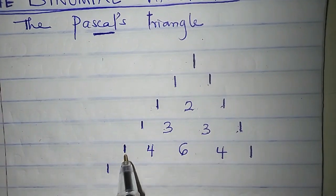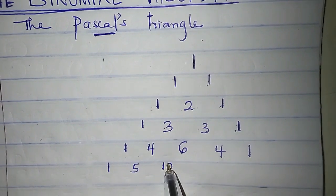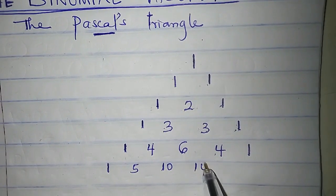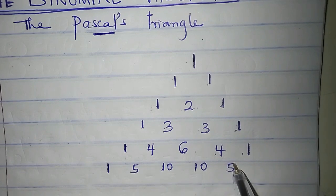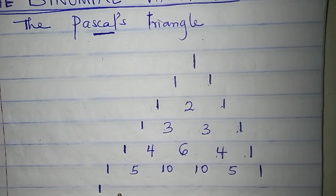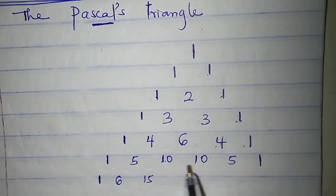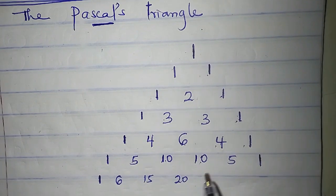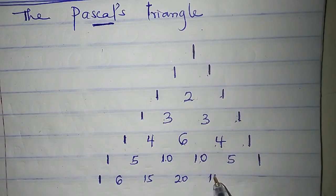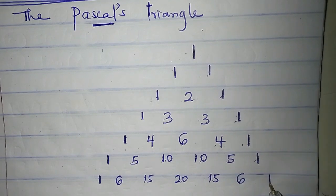1, 1 plus 4 is 5, 4 plus 6 is 10, 6 plus 4 is 10, 4 plus 5 is 5, 1. Then 1 again, 1 plus 5 is 6, 5 plus 10 is 15, 10 plus 10 is 20, 10 plus 5 is 15, 5 plus 1 is 6, then 1.